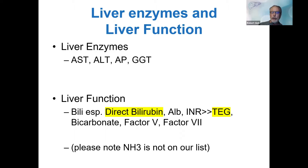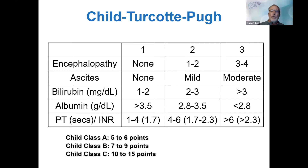I'll be talking about ammonia later, but my comment on ammonia testing is that people who order ammonia testing are often more confused than their patients. Regarding liver function: the Child-Turcotte-Pugh score is an old, old test — about 40 years old.